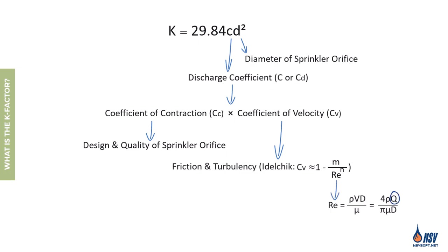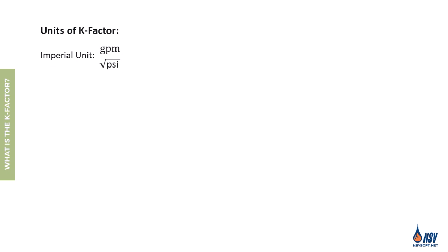The coefficient of velocity depends on factors such as friction between water and the internal surfaces of the sprinkler head and turbulence within the sprinkler. In theory, flow rate can influence the coefficient of velocity and thus the K factor. However, in fire sprinkler systems where the flow regime is highly turbulent, this influence is negligible. For hydraulic design we treat the K factor as constant, determined solely by the sprinkler's physical characteristics such as orifice size and manufacturing precision. In imperial units the K factor is expressed as gallons per minute per square root of psi.